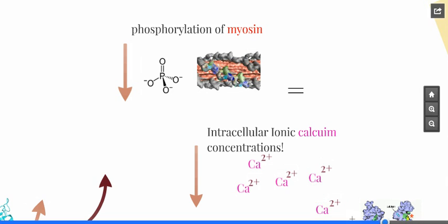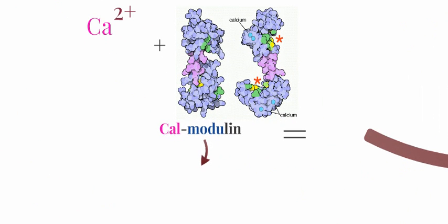And it might seem pretty relevant to everybody listening to this, that calcium has a lot to do with muscle contraction. But how does that work? So we have calcium. It's inside our cell. What does it have to do to contract a muscle? Well, it has to attach to this other protein called calmodulin.